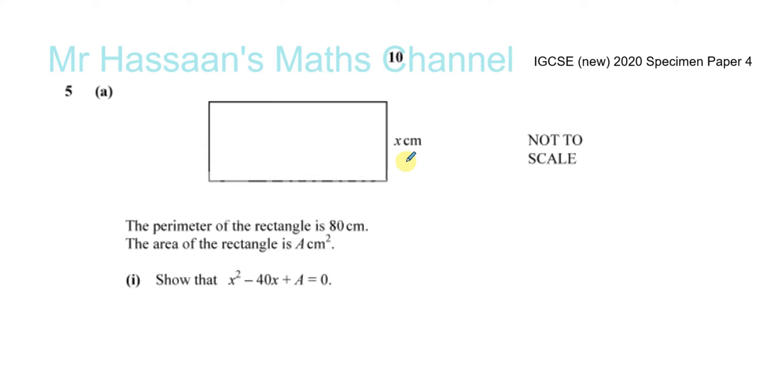So it says the perimeter of the rectangle is 80 centimeters. They only gave us the width as x. It's a rectangle, so I know this must be x as well. So they didn't give us the length here. The area of the rectangle is a centimeter squared. Well, that's not very helpful. So the area is a squared centimeters.